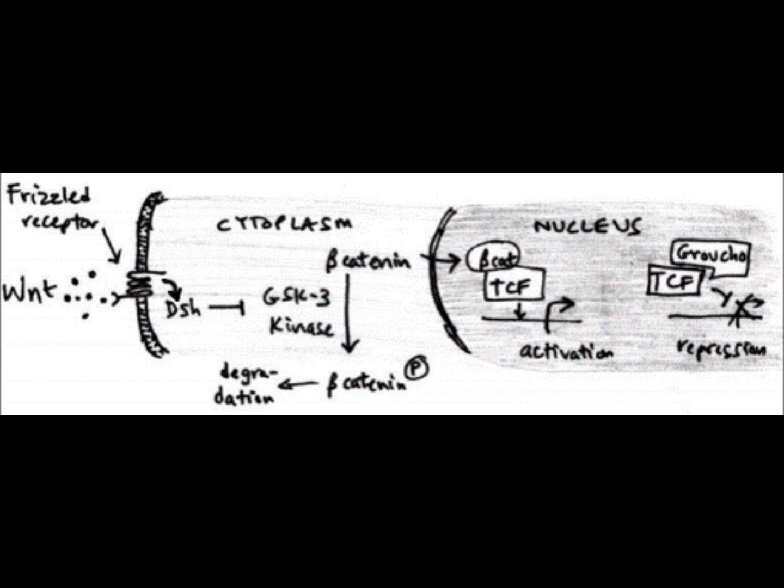GSK3 kinase phosphorylates beta-catenin which marks it for degradation and does not allow it to enter the nucleus. Since disheveled is activated, GSK3 kinase is repressed. That means beta-catenin can enter the nucleus. After beta-catenin has entered the nucleus it can now bind to TCF which then forms a transcriptional activator.